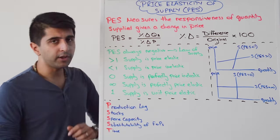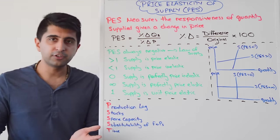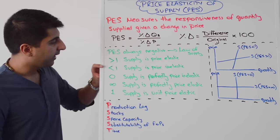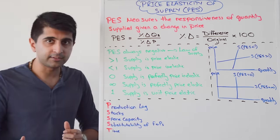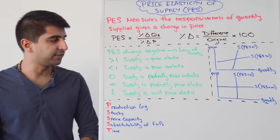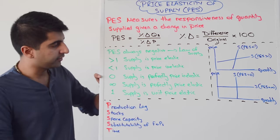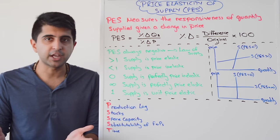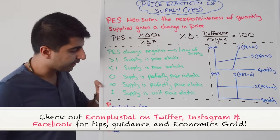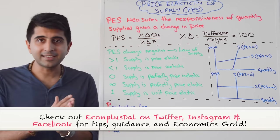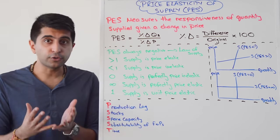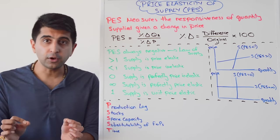If that number is greater than 1, it means supply is price elastic — for any price change, the change in quantity supplied will be proportionately greater than the change in price. If the figure is less than 1, supply is price inelastic — quantity supplied will change but proportionately less than the change in price. If it's 0, supply is perfectly price inelastic. Infinity means perfectly price elastic, and 1 means unit price elastic. This is exactly the same way of interpreting figures as with PED.